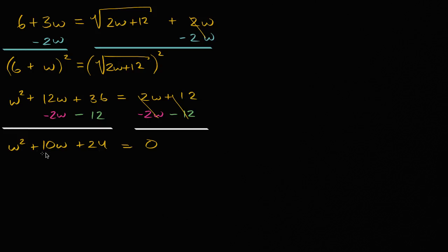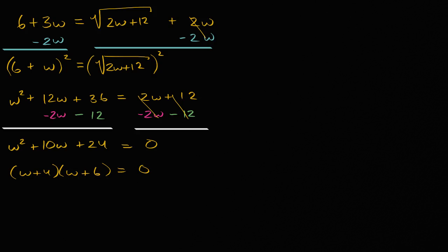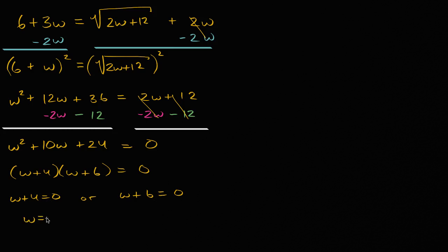Let's see if this is factorable. Are there two numbers that add up to 10 and whose product is 24? What jumps out at me is six and four. So we can rewrite this as w plus four times w plus six is equal to zero. If I have the product of two things equaling zero, either one or both of them could be equal to zero. So w plus four equals zero, giving w equals negative four, or w plus six equals zero, giving w equals negative six.